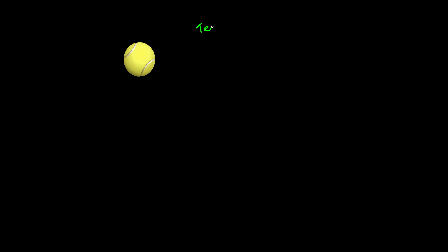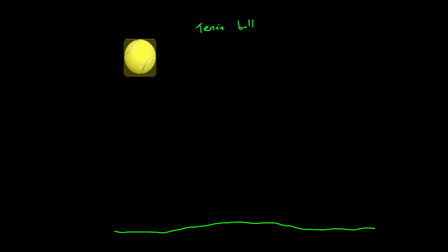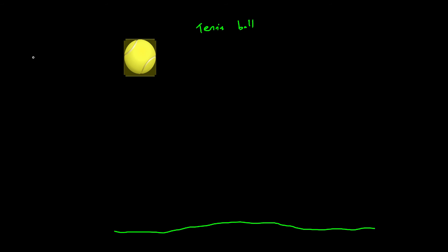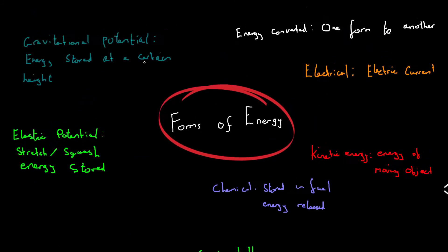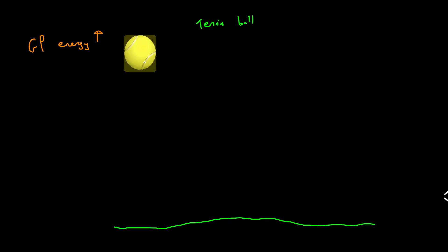Let's look at one example of energy transfer. Here we have a tennis ball being held above the ground. Let's label what types of energy the tennis ball has at this moment: it's above the ground, so it has gravitational potential energy — quite a lot of it. Does it have kinetic energy? No, because it's sitting still. Does it have elastic potential energy? No, because it's not being squashed. So gravitational potential energy is the main type here.